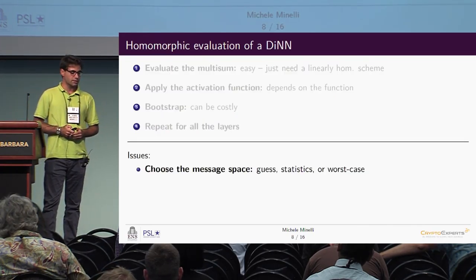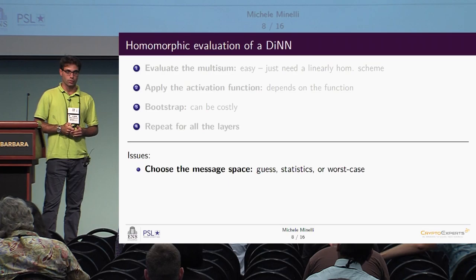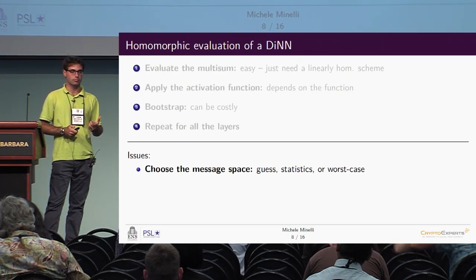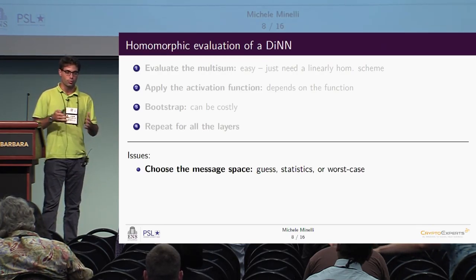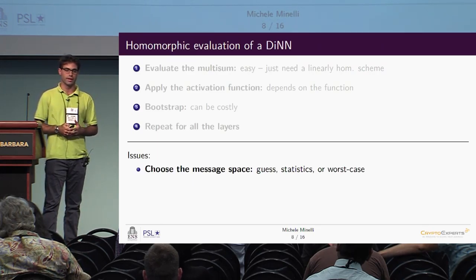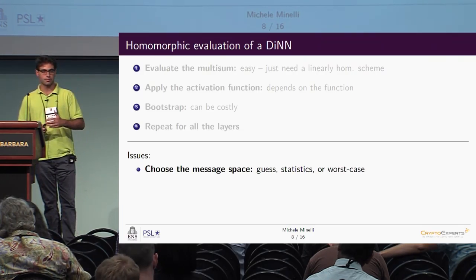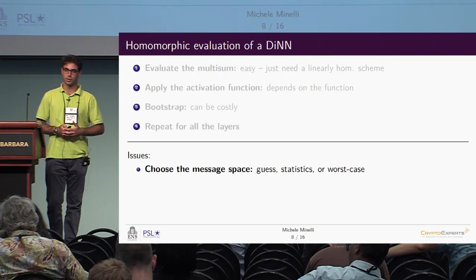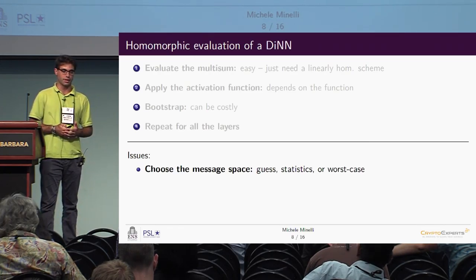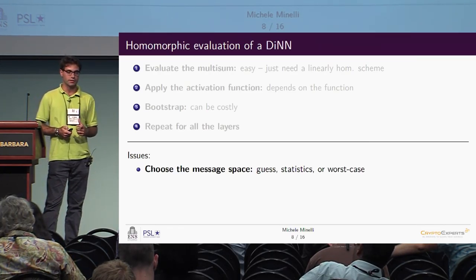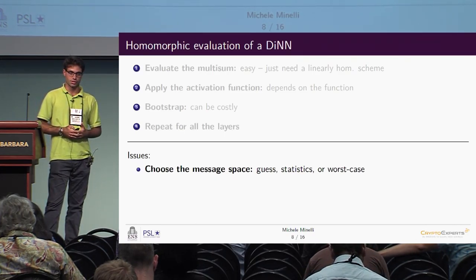We also have some issues to face. First, we have to choose the message space of the encryption scheme. We could estimate a number based on prior information and statistics from the training set, or take the worst case over the entire input space supporting even the worst possible input. The worst-case approach is safest, but if the worst case happens with very low probability, it might be better to sacrifice perfect correctness to achieve more efficiency.